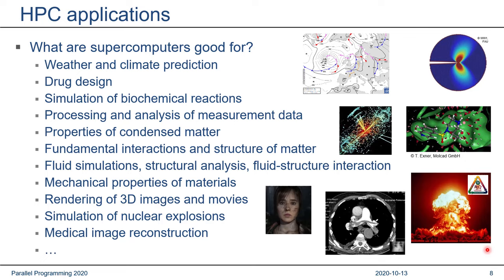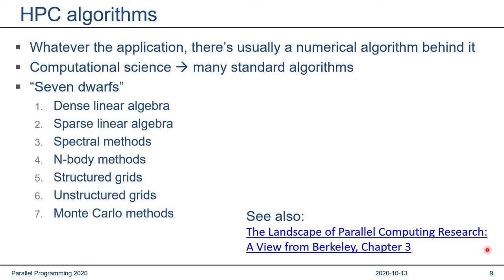Whenever there's an application on a computer, there's usually a numerical algorithm behind it — at least in computational science. It turns out that in computational science there are many standard algorithms that keep appearing wherever you look. A few years ago, there was a famous paper by Lawrence Berkeley National Lab titled 'The Landscape of Parallel Computing Research,' and in Chapter 3 they stated that most computational science codes comprise one or more of seven basic families of computing — they called them the seven dwarfs. They have since extended this to 14, including non-numerical algorithms, but those original seven are a good coverage of the dominant part of computational science.